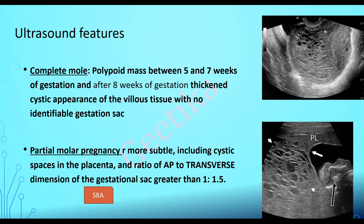On ultrasound, in complete mole we see the typical snowstorm appearance — this is an important exam question where they give you the picture and ask for the diagnosis and management. Between five to seven weeks there will be a polypoidal mass, and after that there will be thick and cystic appearance of villous tissue with no identifiable gestational sac. In partial mole, ultrasound features are subtle and we can confuse it with missed abortion or degenerating fibroids. The anterior-posterior to transverse diameter of the gestational sac is greater than 1:1.5 — an important exam feature of partial molar pregnancy.